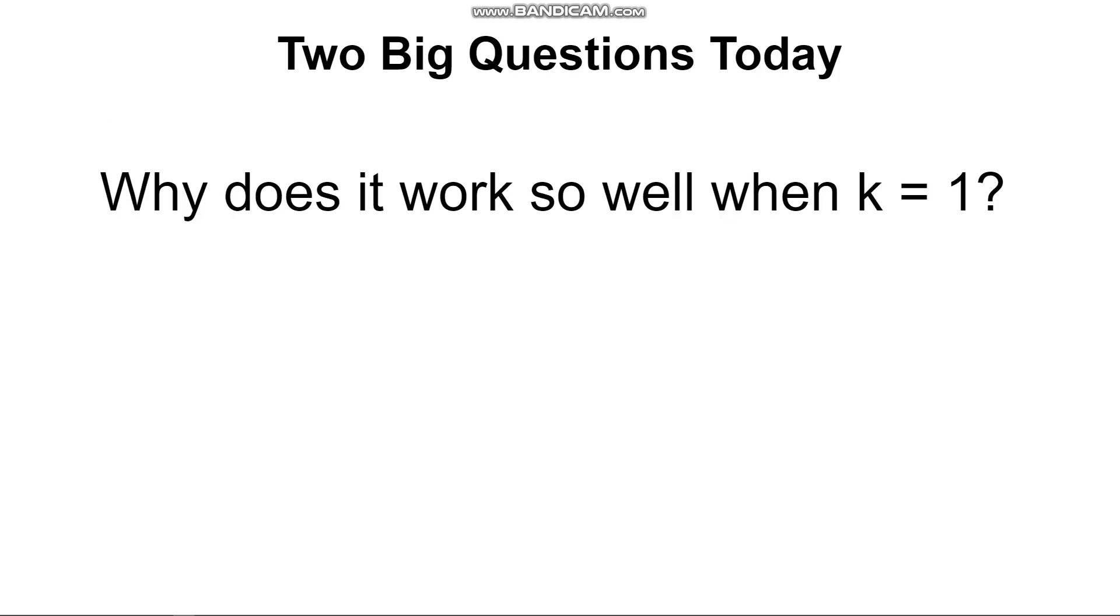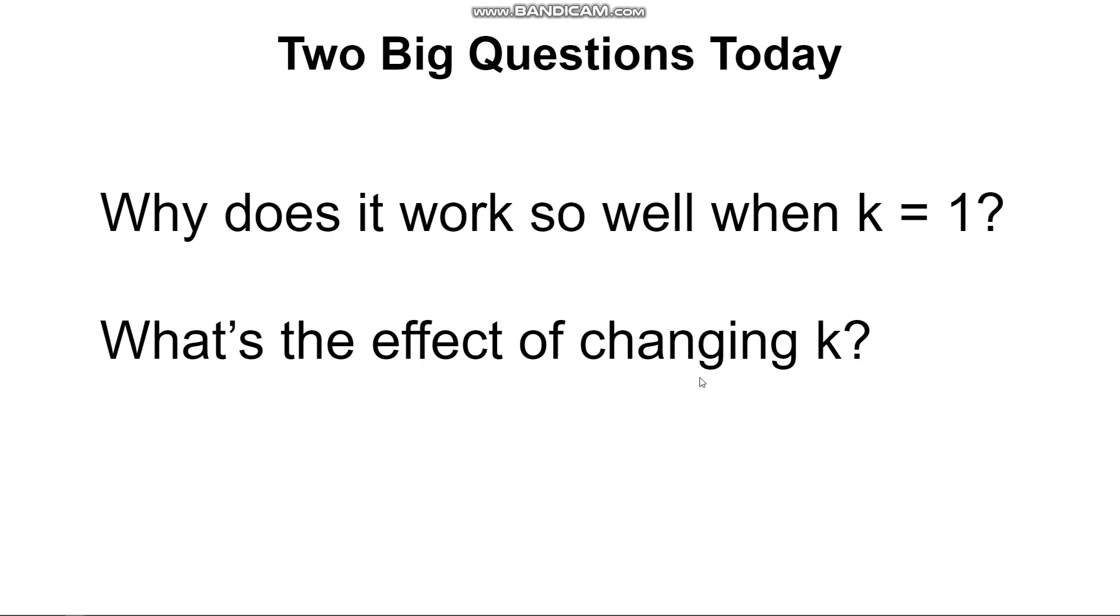All right so on to today's big topic. The two big questions you guys had coming out of last time was why does our algorithm work so well when k equals one? Most people who were successful in implementing this found that you were getting 96, 97, 98 percent accuracy on the test data. And so some people were so surprised that they said I don't think I did it right. It shouldn't be this good. So why is it so good? And then more generally what's the effect of changing k? We know that as we change k we're changing the number of the closest things that we are going to take a vote between to predict our category label. But I think people more wanted to know how does changing k affect the accuracy of the results? Is it always better to make k larger? How do you decide?